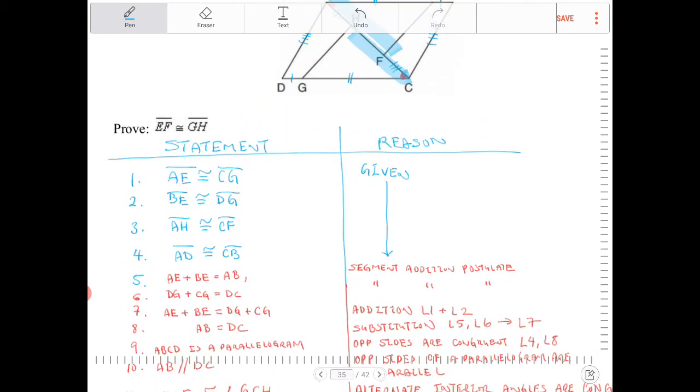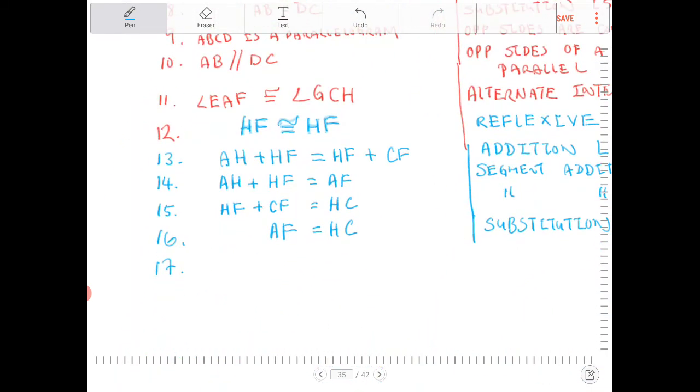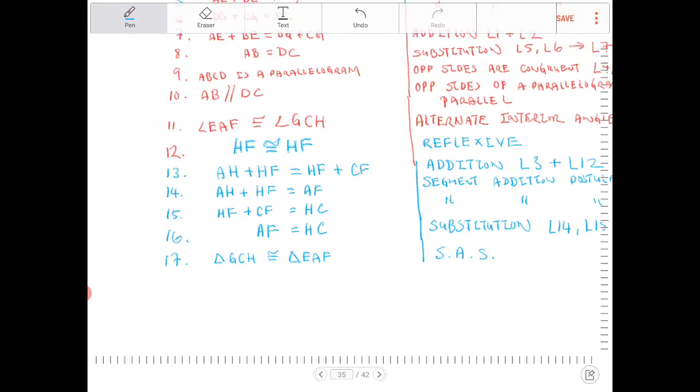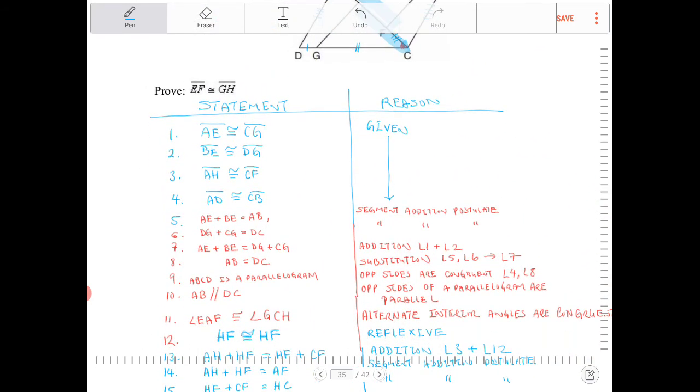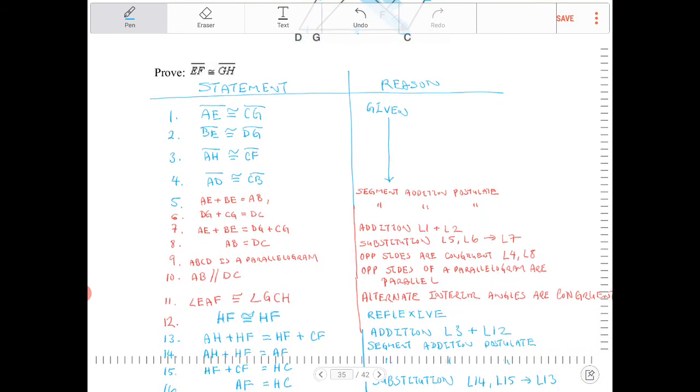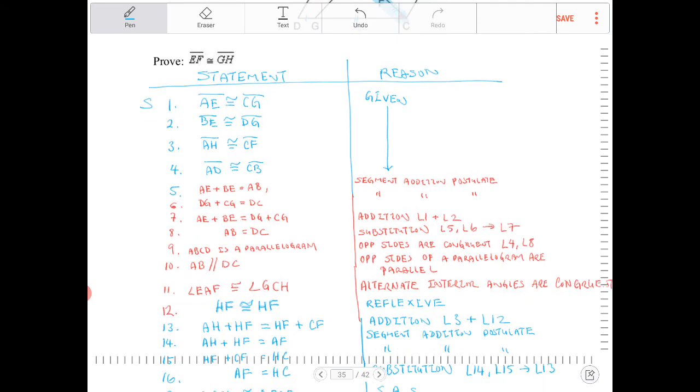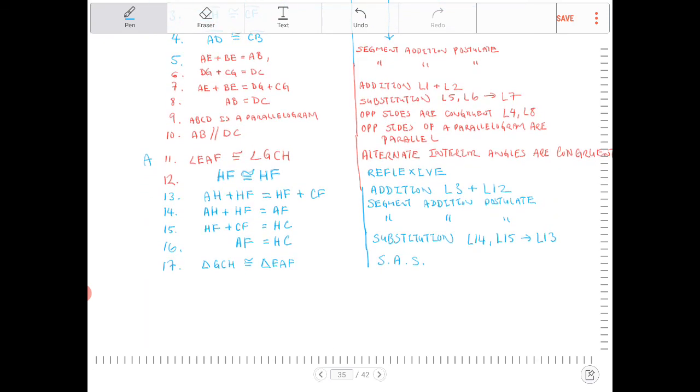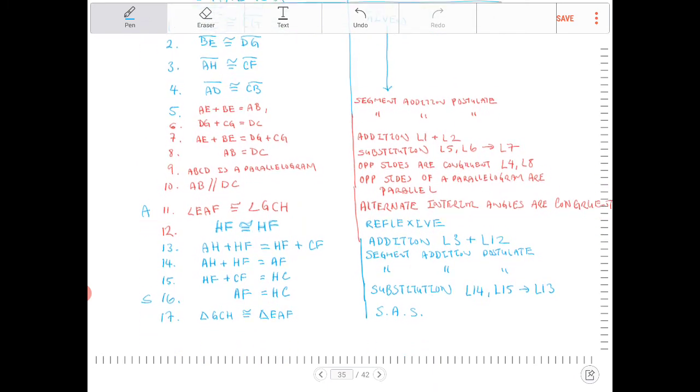And we're pretty close to finishing now because we have AF is equal to HC or congruent to HC. So now I can say that triangle GCH is going to be congruent to triangle EAF because of side, angle, side. Where is it side, angle, side again? Well, that's because I have CG congruent to AE. That's line 1. That's the side right here. And then the angle was proven over here. And the side was proven in the last step right here. So it's lines 1, 11, and 16.